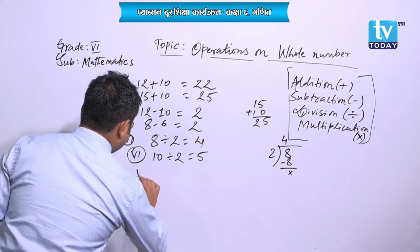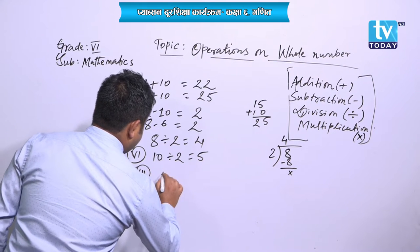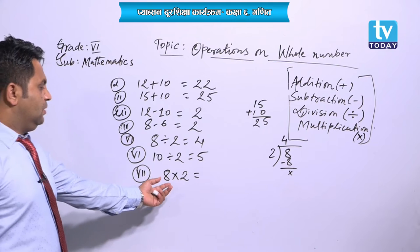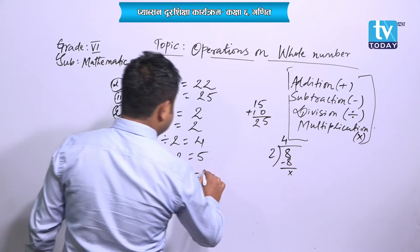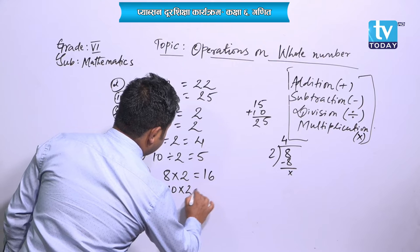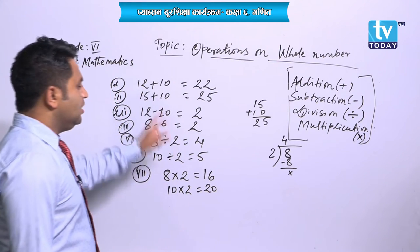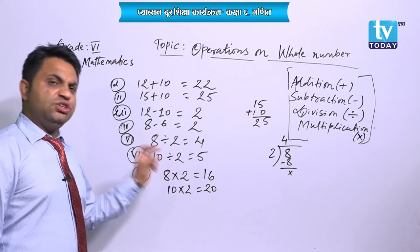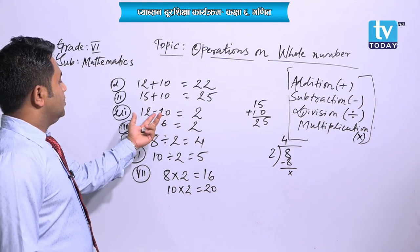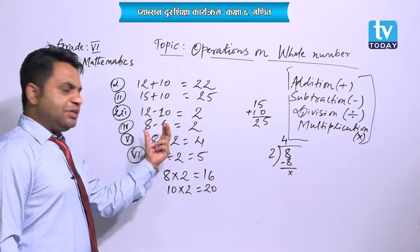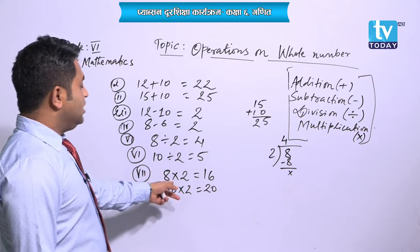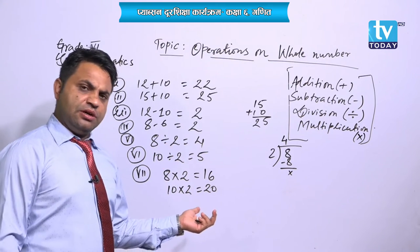Now the multiplication symbol: like 8 into 2, you have to find the product — that is 16. Like 10 into 2 is 20. These are the operations we have to use. Addition means we have to add, subtraction means we have to subtract, division means we have to divide, and multiplication means we have to find the product.